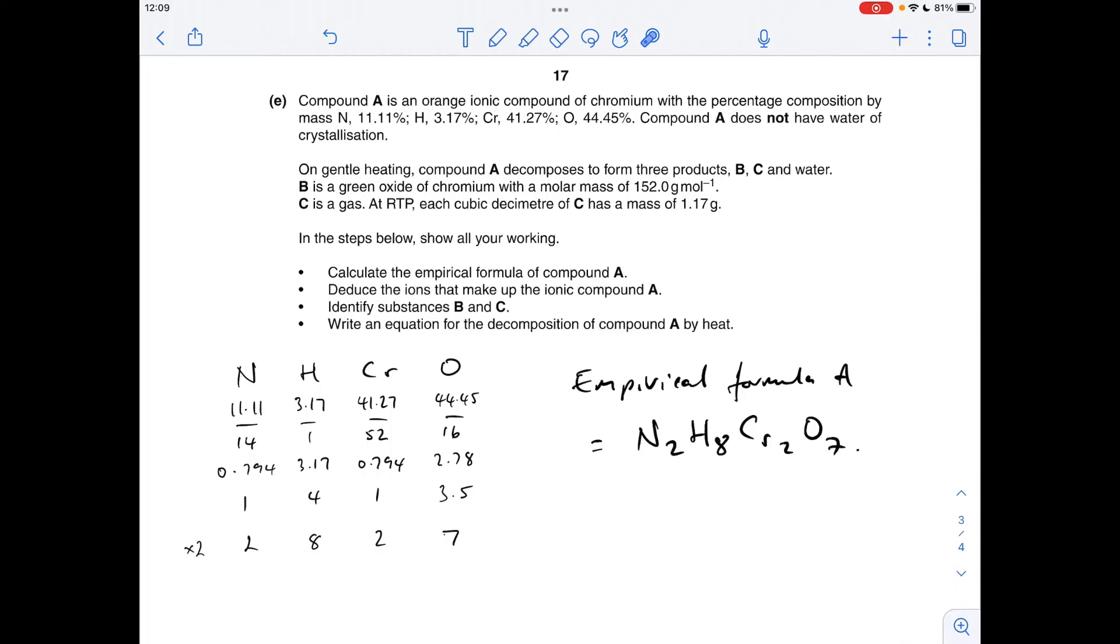So which ions are making up compound A? Well, hopefully you recognize the dichromate(VI) ion there, so a Cr₂O₇²⁻ ion. So that leaves 2 ammonium ions, 2 NH₄⁺ ions.